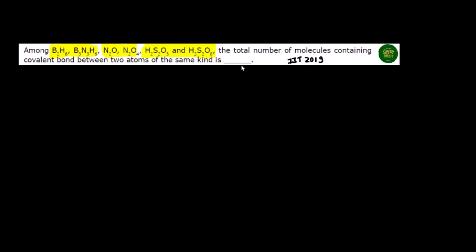We ask which structures have the same type of atoms bonded to each other. The total number of molecules containing a covalent bond between two atoms of the same kind. Same element bonded with same element: oxygen-oxygen, boron-boron, carbon, nitrogen, hydrogen-hydrogen, sulfur-sulfur-sulfur — these are same-element bonds.